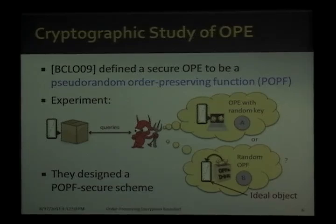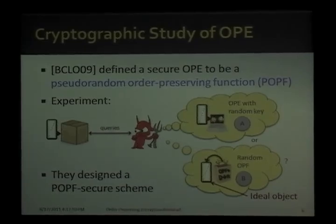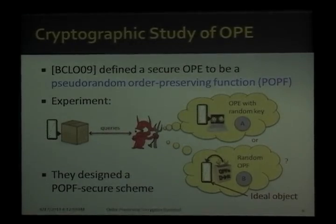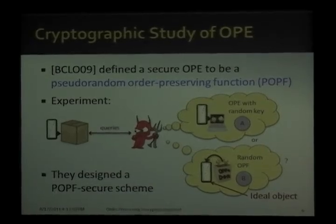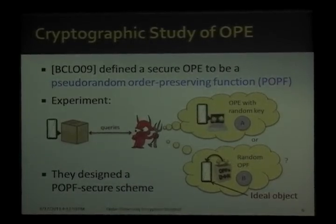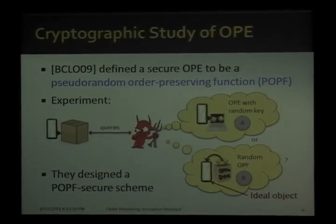This is a similar definition to that of a pseudorandom function. The security experiment is as follows: the adversary is given black box query access to an order-preserving function, and is tasked with deciding whether that function is the OPE scheme on a random key, or a random order-preserving function from the set of all order-preserving functions on the same domain and range. This latter object we call the ideal object for this definition, as it's what an OPE should emulate if it's trying to be POPF secure.